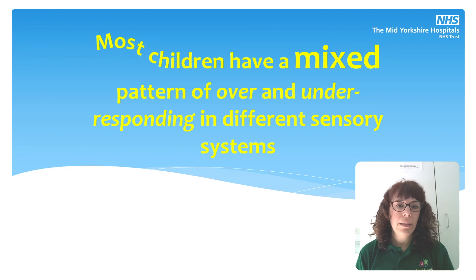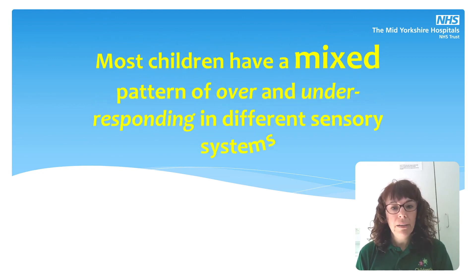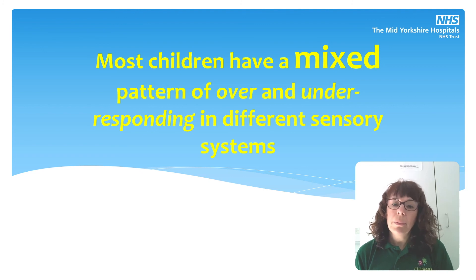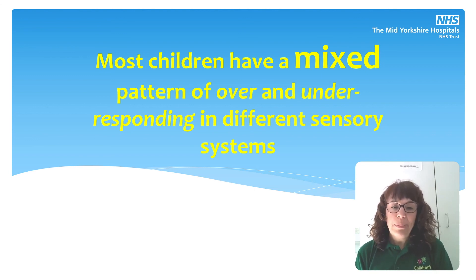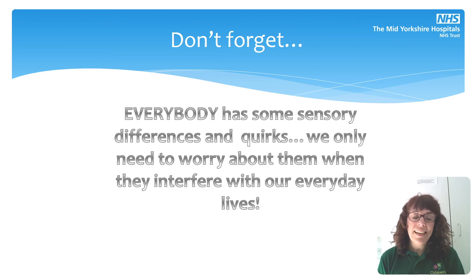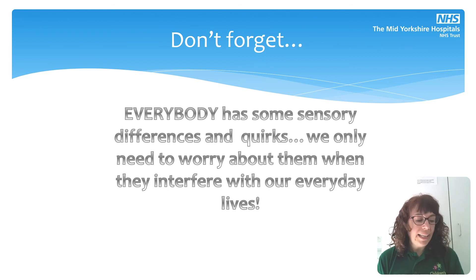The most important thing to mention here is that most children have a mixed pattern of over- and under-responding across the different systems. Children don't tend to be all over or all under — they might be over-responsive to noise and touch, but under-responsive to movement and body position. This is one of the reasons sensory can seem quite confusing when you first start looking into it, because often no two people are alike and people can respond one way to one sensation and the completely opposite way to a different sensation. It's also worth noting that everybody has some sensory differences and quirks — it's only when it becomes a problem behaviour or starts to interfere with everyday life that we need to think about it.